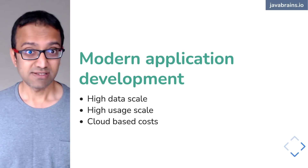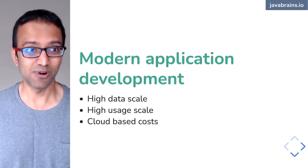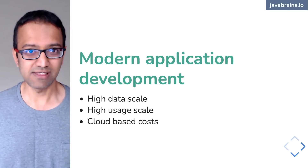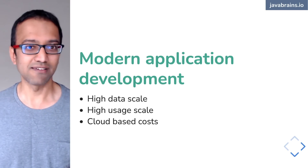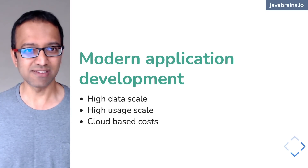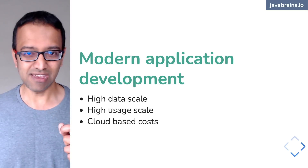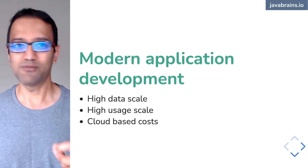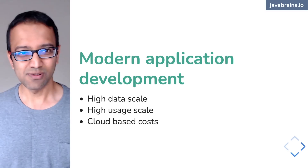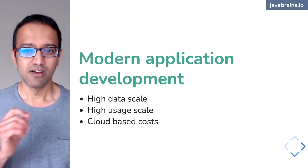The third criteria is we are worried about costs a little more than we were earlier. When we had on-prem data servers, we would buy servers and hold them in our own data centers. If we had 16 or 32 gigs of memory, it was okay if code was a little inefficient — we'd already paid for it. But with cloud, you immediately see the impact of optimizations.